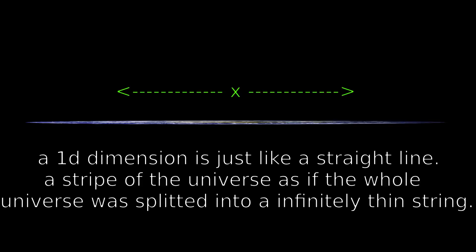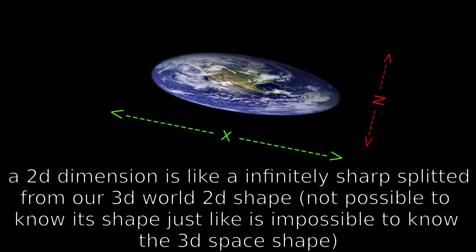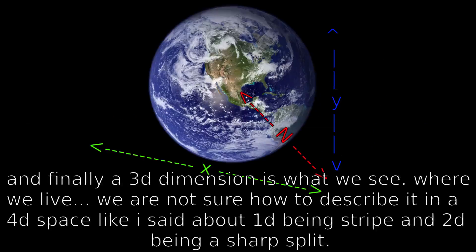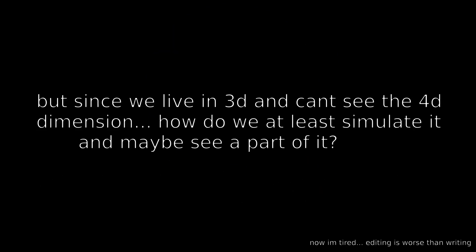A 1D dimension is just like a straight line — a stripe of the universe, as if the whole universe was split into an infinitely thin string. A 2D dimension is like an infinitely sharp split from our 3D world — a 2D shape, not possible to know its shape, just like it is impossible to know the 3D space shape. And finally a 3D dimension is what we see, where we live. We are not sure how to describe it in a 4D space, like I said about 1D being a stripe and 2D being a sharp split. But since we live in 3D and can't see the 4th dimension, how do we at least simulate it and maybe see a part of it?